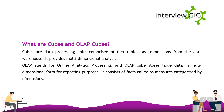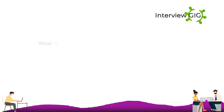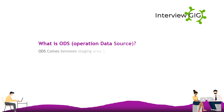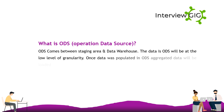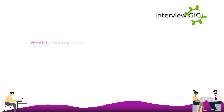ODS stands for Operational Data Store. ODS comes between the staging area and the data warehouse. The data in ODS will be at a low level of granularity. Once data is populated in ODS, aggregated data will be loaded into the data warehouse through ODS.